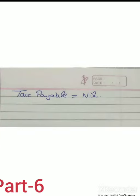In Case 2, tax payable is nil because the total taxable income of Rs. 2,49,600 is below the basic exemption limit of Rs. 2,50,000. So this is all about your KUD 2015 question paper case study solution. For any doubts, comment below. Thank you for watching.